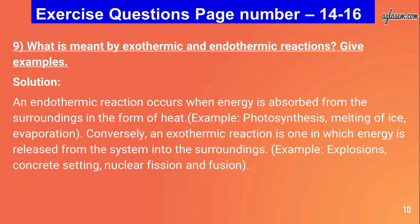Question number nine: what is meant by exothermic and endothermic reactions? An endothermic reaction occurs when energy is absorbed from the surroundings in the form of heat; examples include photosynthesis, melting of ice, and evaporation. An exothermic reaction is one in which energy is released from the system into the surroundings; examples include explosions, concrete setting, and nuclear fission and fusion.